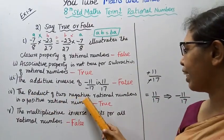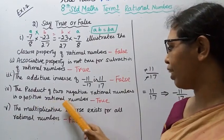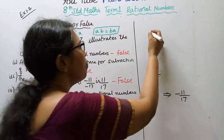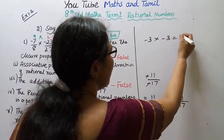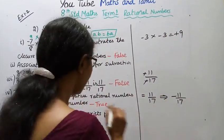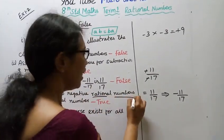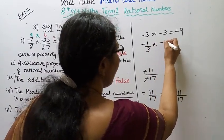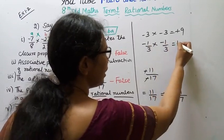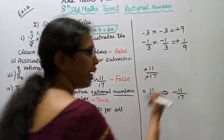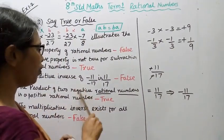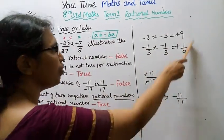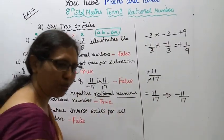Fourth: The product of 2 negative rational numbers is a positive rational number. For example, minus 3 into minus 3 equals plus 9. Similarly, minus 1 by 3 into minus 1 by 3 equals plus 1 by 9, since minus into minus gives plus. So the product of 2 negative rational numbers is a positive rational number - this is True.